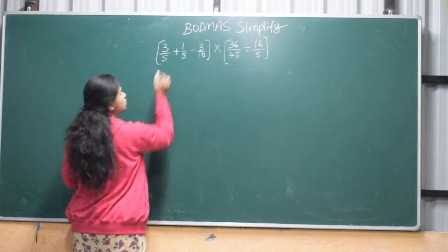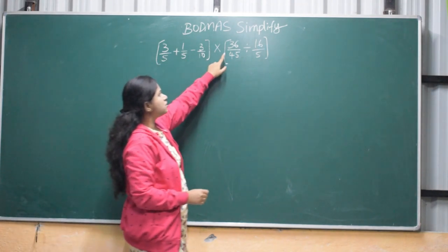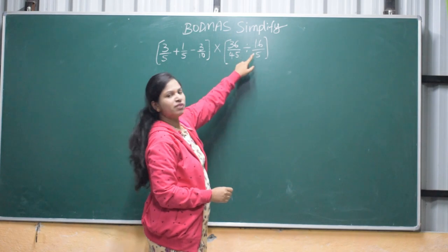3 by 5, 3 by 5 plus 1 by 5 minus 3 by 10, into 36 by 45, divide by 16 by 5.